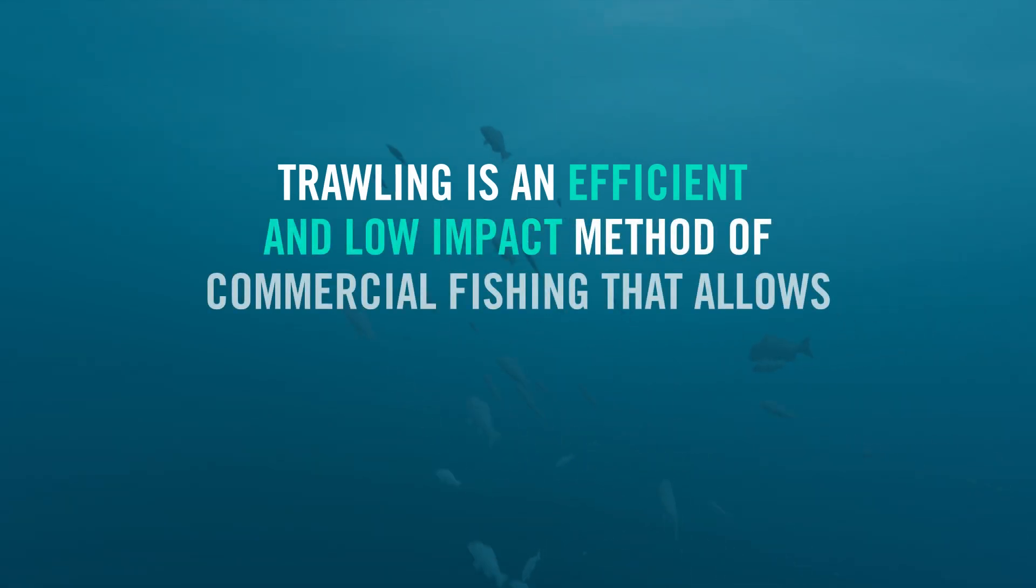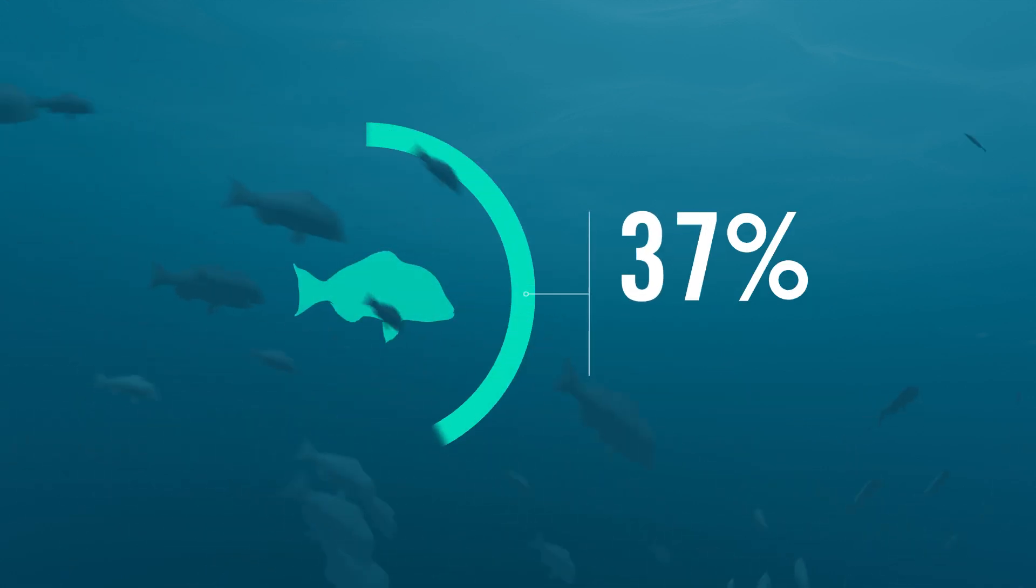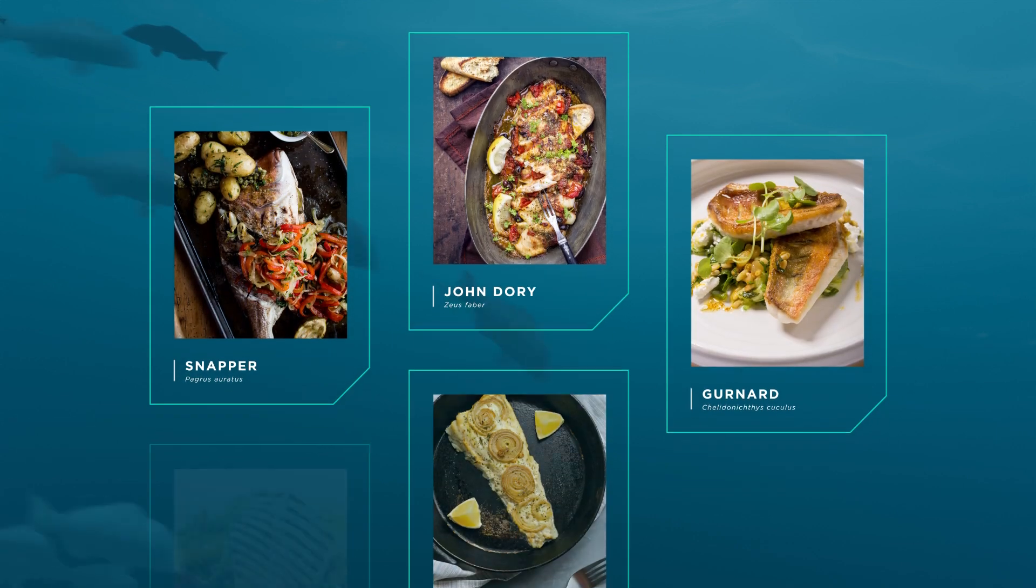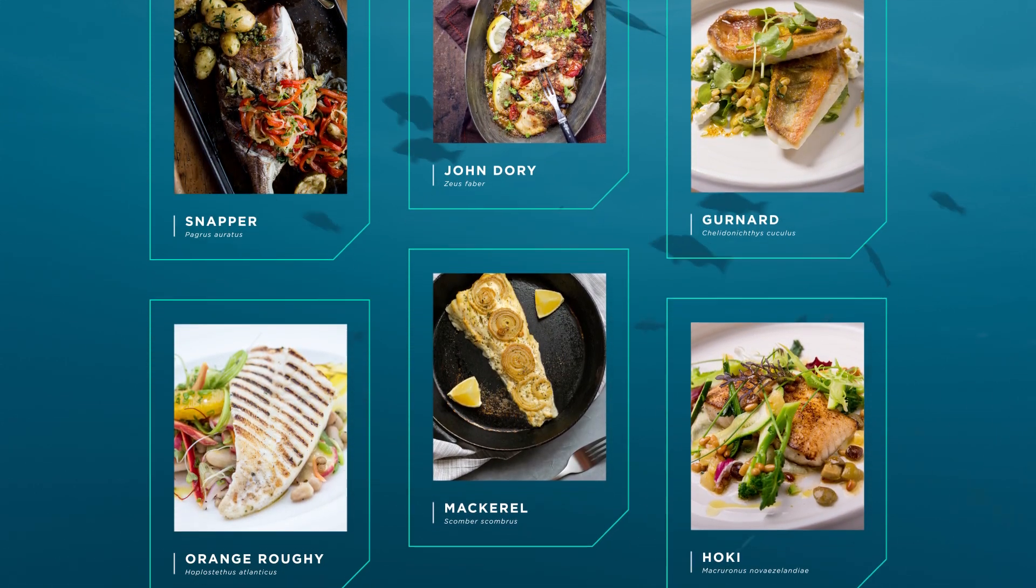Trawling is an efficient and low-impact method of commercial fishing that allows kiwis to enjoy a wide variety of tasty, quality fish in abundance. In fact, 70% of fish consumed locally is harvested via the trawl method. That's the fish you cook and eat on a regular basis, species like snapper, hoki and cod.